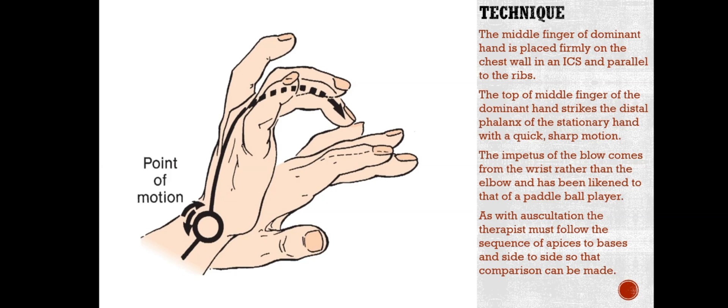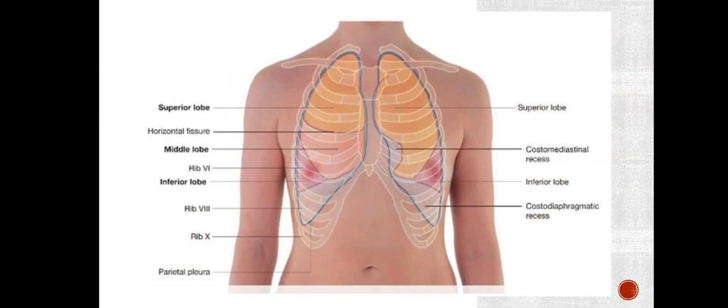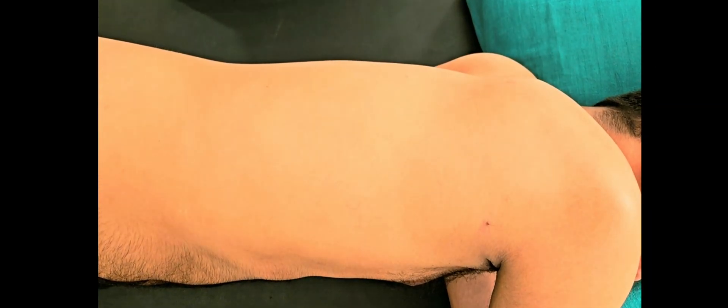Percussion technique. The middle finger of the dominant hand is placed firmly on the chest wall in an intercostal space, parallel to the ribs. The tip of the middle finger of the dominant hand strikes the distal phalanx of the stationary finger with a quick, sharp motion. The impetus comes from the wrist rather than the elbow. As with auscultation, the therapist follows the sequence apex to base and side to side for comparison. Percussion is performed over each lobe of both lungs, and both sides are compared for abnormalities. The right middle lobe, located at the 4th to 6th intercostal space on the right side, is also percussed.